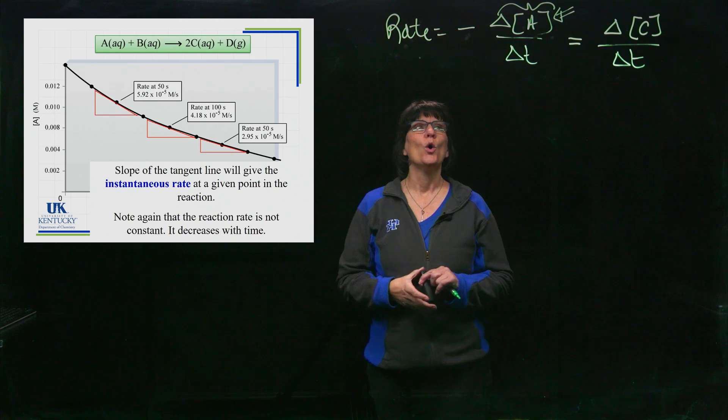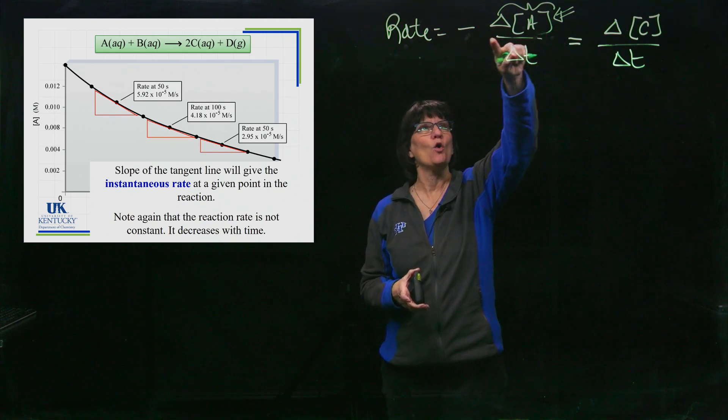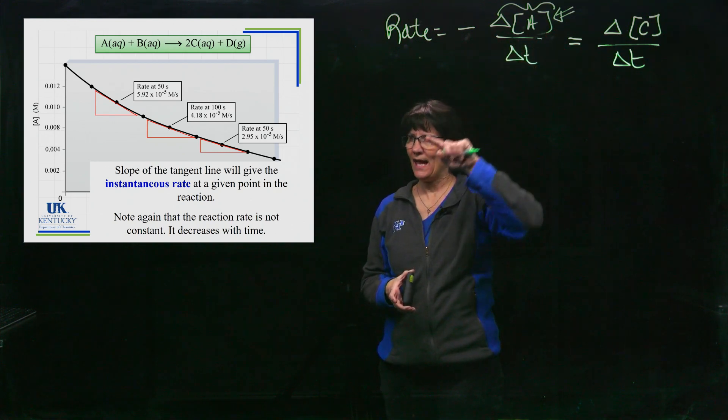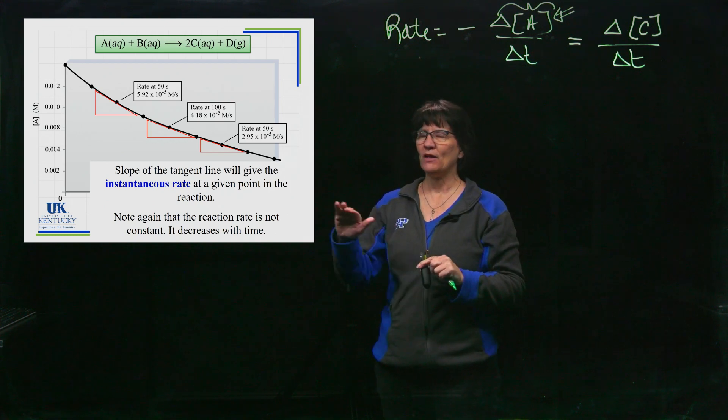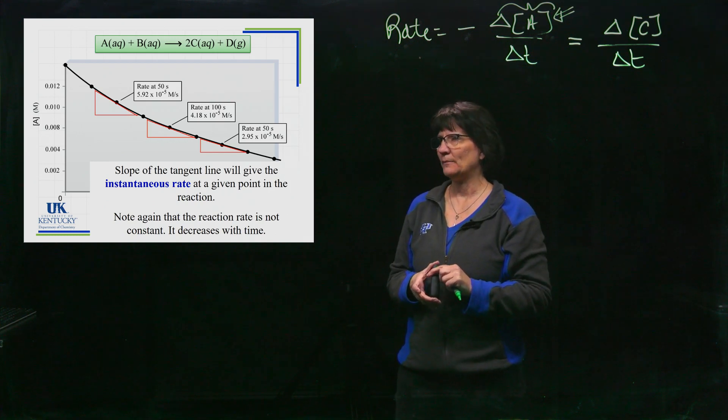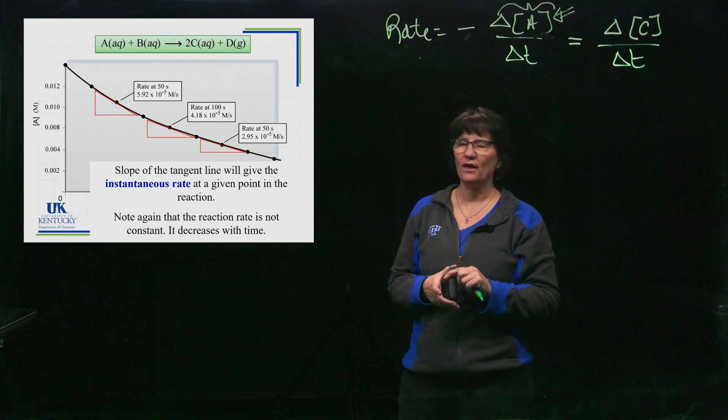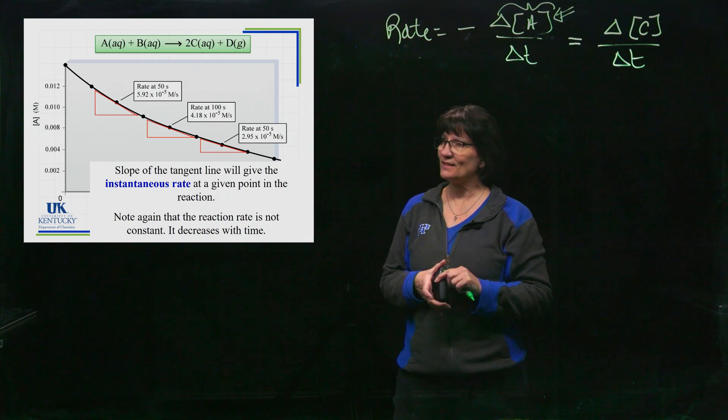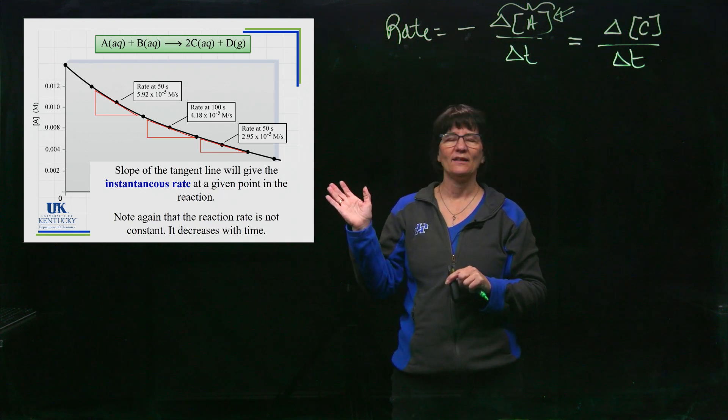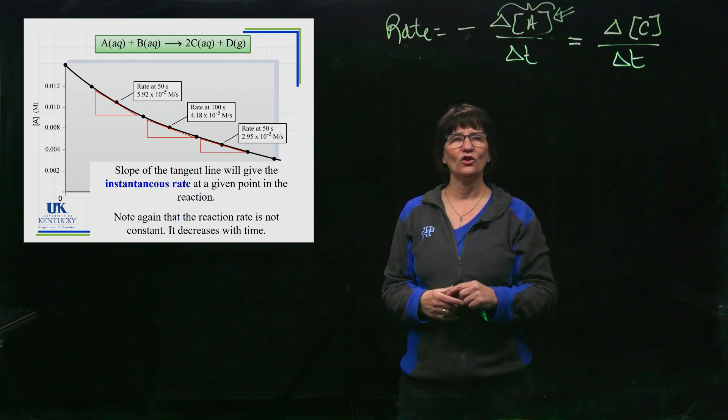So we don't have to measure it over an interval, we can graph it and determine it at instances by having a slope at the tangent line. Now we see here on this graph that yes indeed the rate is changing as time goes by, and we see that as time goes by it is slowing down.